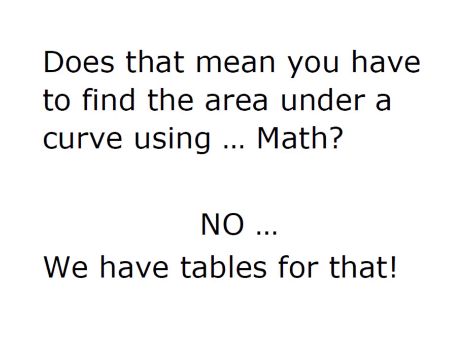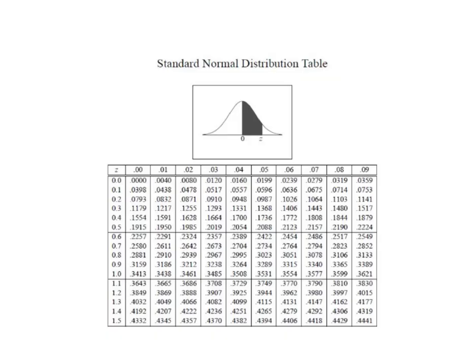We have tables for that. So here's an example of a standard normal distribution table. There are many varieties of this available. It's important for you to determine before using the table, what do the areas in the table represent?